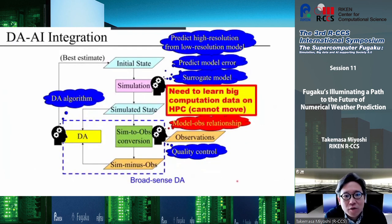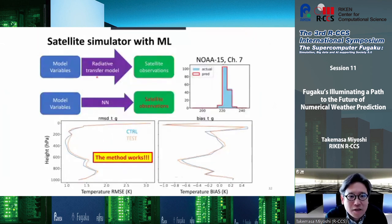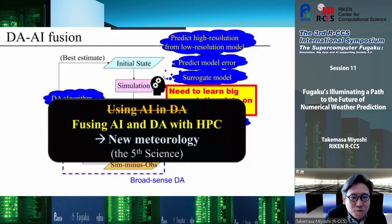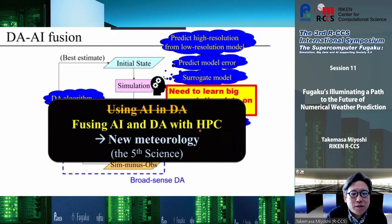To wrap up: we tested machine learning for radiative transfer for satellite observations and it worked very well — producing as accurate results as using a physical radiative transfer model. The idea is to use AI in data assimilation and to fuse AI algorithms with data assimilation on HPC, which is possible on Fugaku and will create a new meteorology. Thank you very much.